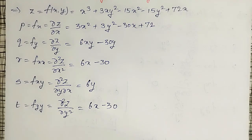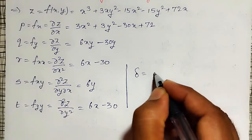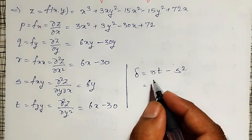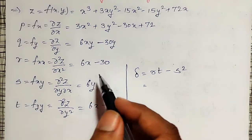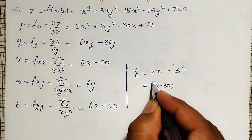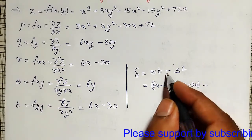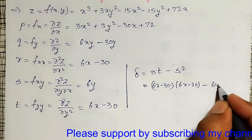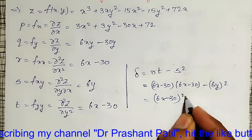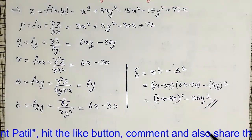Next, I will calculate and simplify the quantity delta = rt - s². Computing r×t: (6x - 30)(6x - 30) minus s² = (6y)² gives delta = (6x - 30)² - 36y².